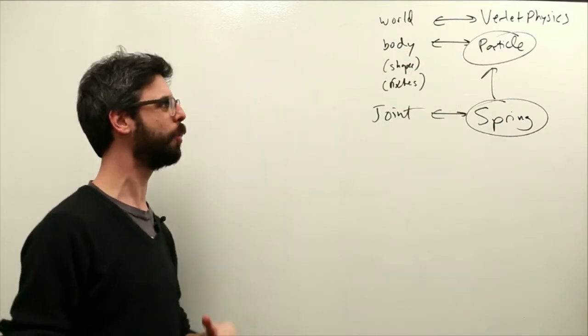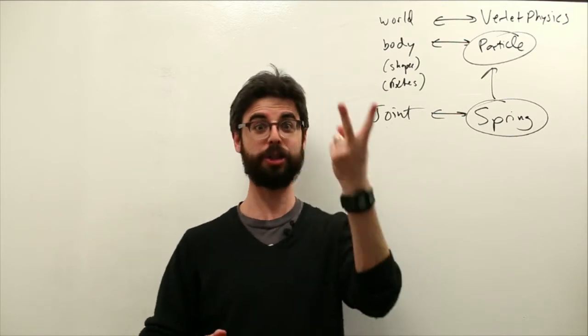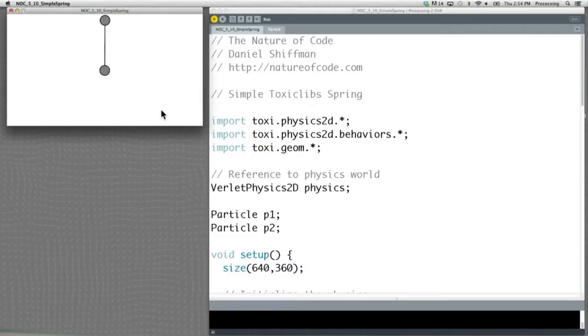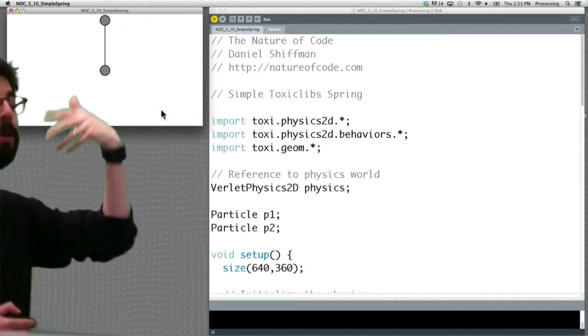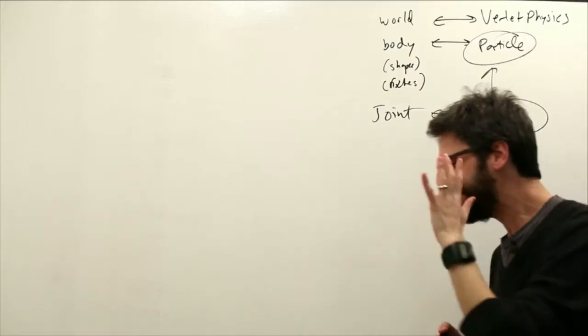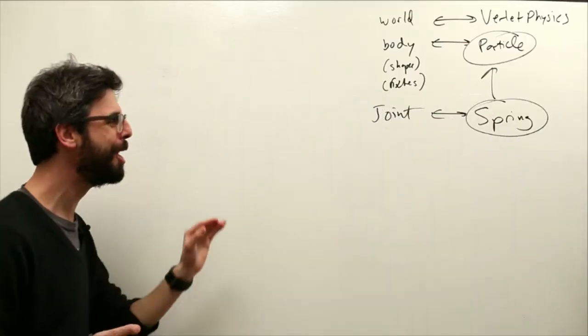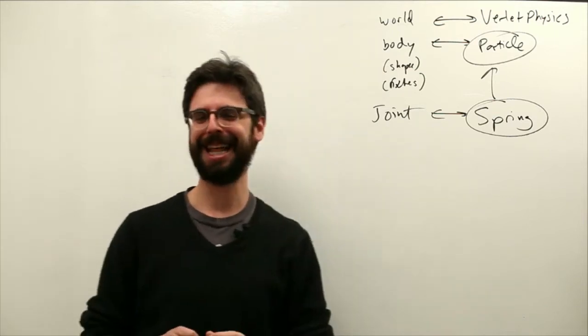So these are the things we need to feel comfortable with. We're gonna make a Verlet physics object, we're gonna make a particle object, we're gonna make two particle objects, you know, if we look back at this example, we're gonna make a world Verlet physics, we're gonna make two particle objects, and one spring object.